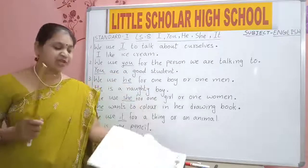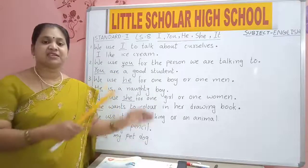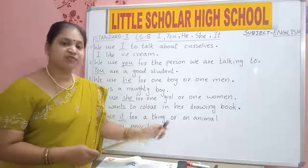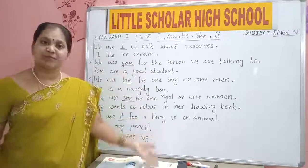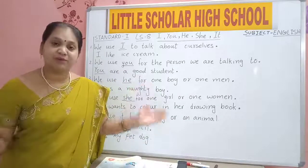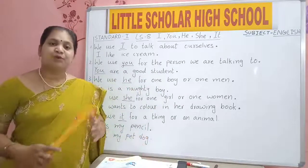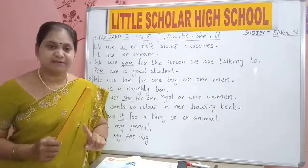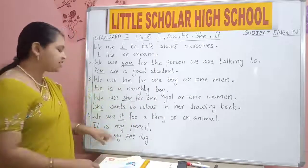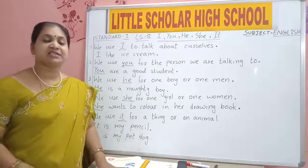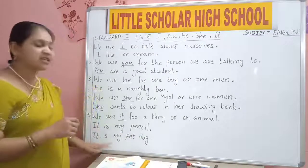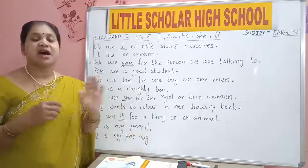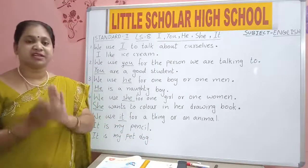It is my pencil. It is my bag. For animals also we will use IT. It is a beautiful peacock. It is my pet dog. It likes to eat crunchy biscuits. It likes to sleep in his kennel. IT is used for things, animals, and birds also. It is a pigeon. It is a sparrow. It is a beautiful butterfly. We use IT for things, animals, and birds.